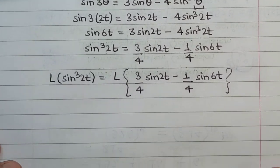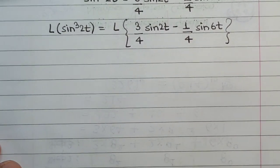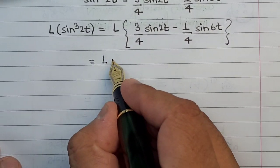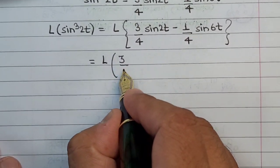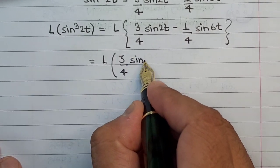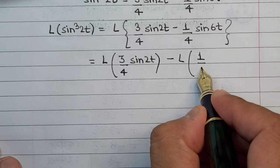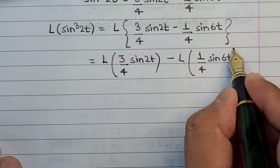After that the only thing left is the direct application of the formula for Laplace transform. This will be L of 3 upon 4 sine of 2t minus L of 1 upon 4 sine of 6t.